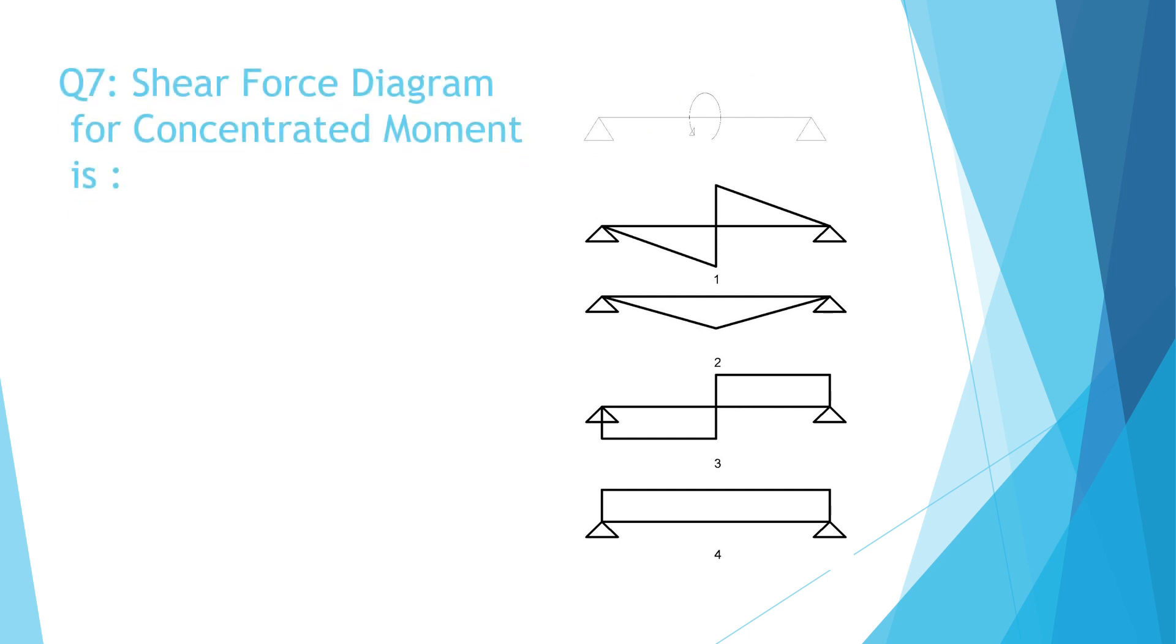Question number seven. Shear force diagram for concentrated moment is. A. Figure number one. B. Figure number two. C. Figure number three. D. Figure number four. The correct answer is D, figure number four.